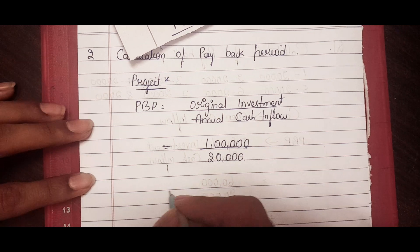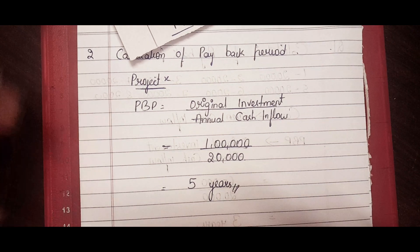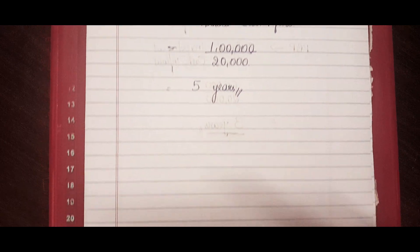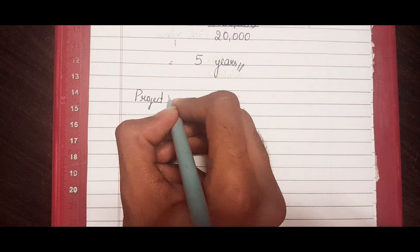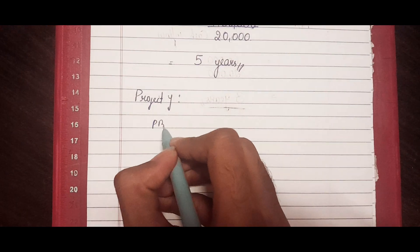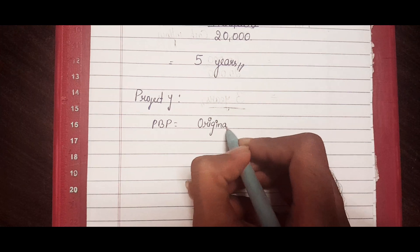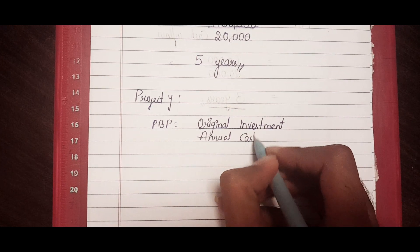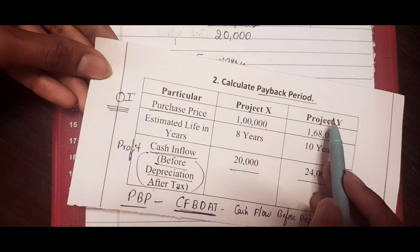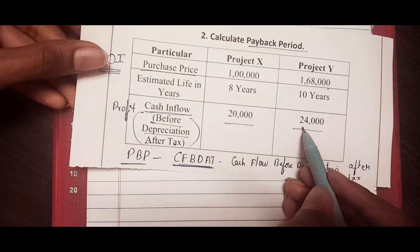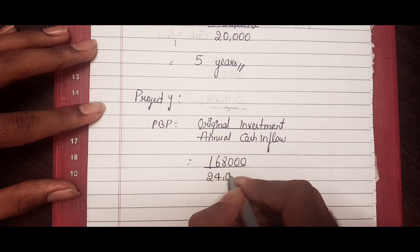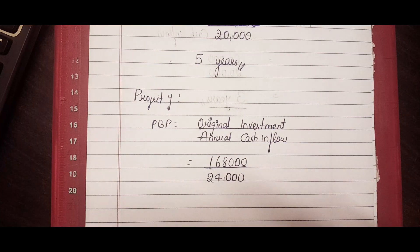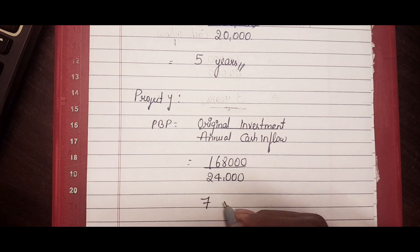So 1,00,000 divided by 20,000 gives five years — meaning the invested amount is recovered within five years. For Project Y, applying the same formula: original investment is 1,68,000 divided by annual cash inflow of 24,000, which gives seven years. So the invested amount for Project Y is recovered in seven years.